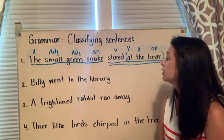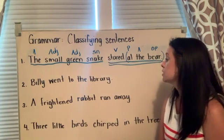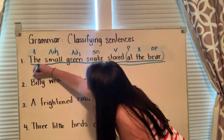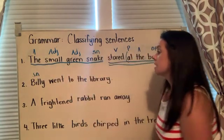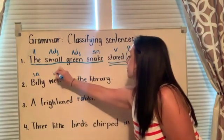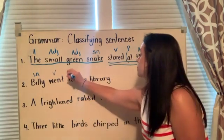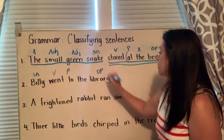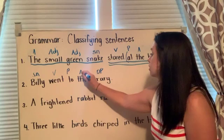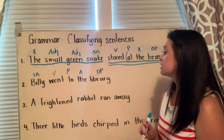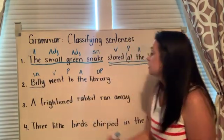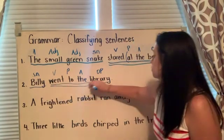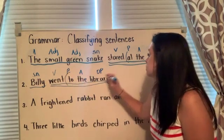Let's read sentence two together: Billy went to the library. Who went to the library? Billy. Subject noun. What is being said about Billy? Billy went. Verb. To? Preposition. To what? Library. Object of the preposition. The? Article adjective. Complete subject: Billy. Complete predicate: went to the library. Prepositional phrase: to the library.